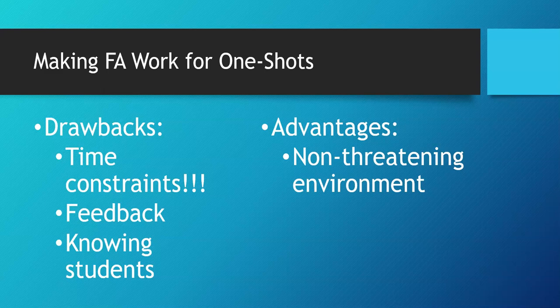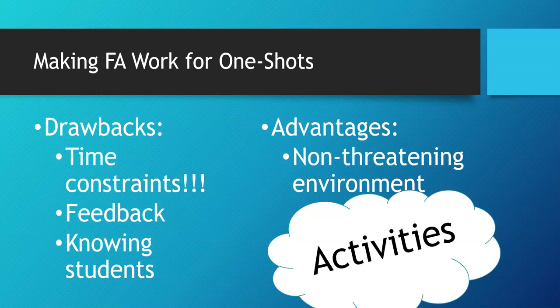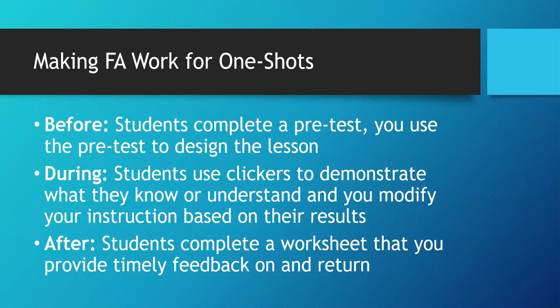The key to making formative assessment work for one-shots is finding activities within our constraints. It's useful to distinguish between before, during, and after formative assessment activities. For a before activity, students could complete a pre-test before coming to class in collaboration with a professor, and you use those results to design the lesson. I do this in an English composition class where the professor assigns a pre-test in week one, and I use those results for my lesson plan when I meet them in week three or four.